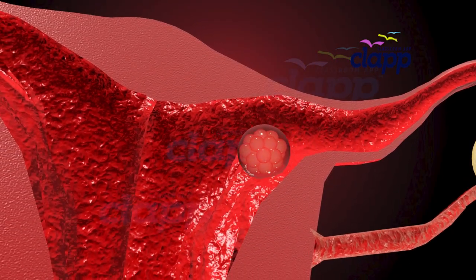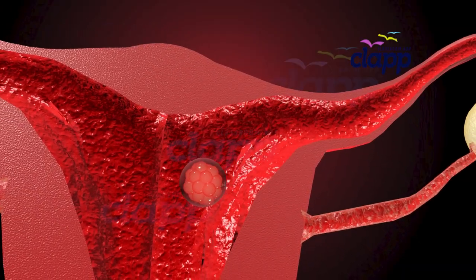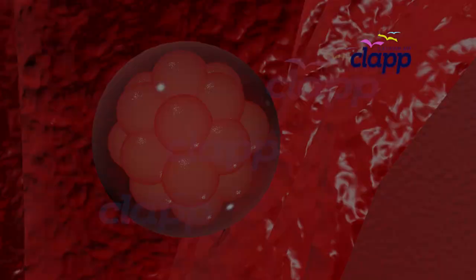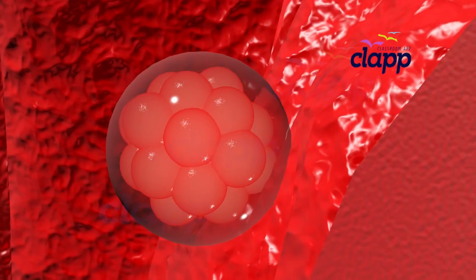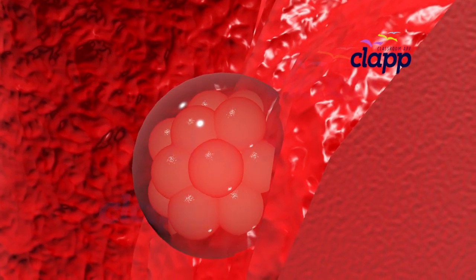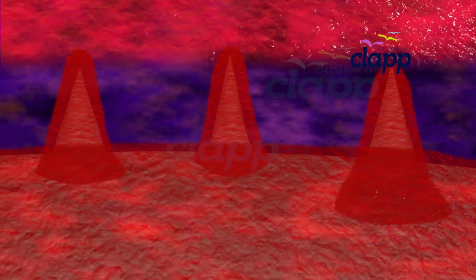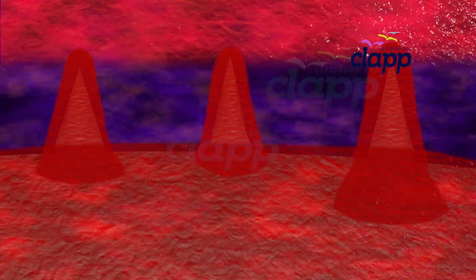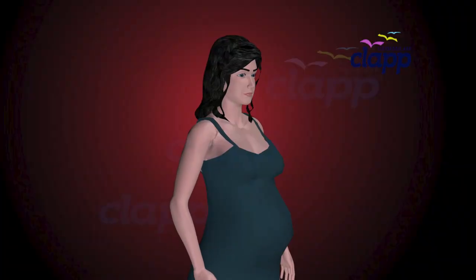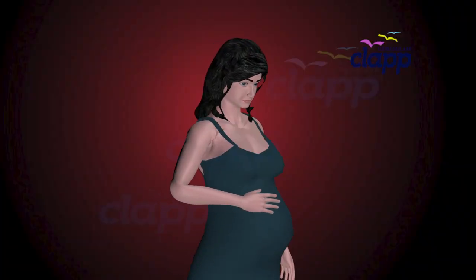Around the fifth to seventh day, this tiny structure reaches the uterus and attaches itself to the uterine wall. This process is called implantation. Implantation connects the embryo with the mother's blood supply and is the true beginning of pregnancy.